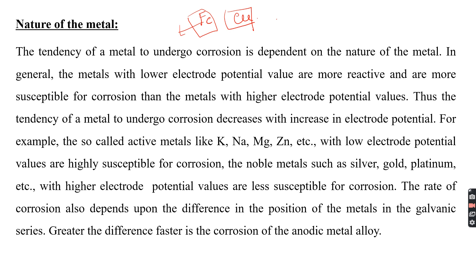Why does iron readily undergo corrosion but not copper? If you observe the electrode potential of iron and copper, the reduction potential of iron is less compared to copper. This is decided based on the galvanic series — a series arrangement of different metals and alloys in increasing order of their reduction tendencies. In the galvanic series, iron is at the top and copper is below iron, indicating iron is more active and more susceptible for corrosion, whereas copper is less susceptible.